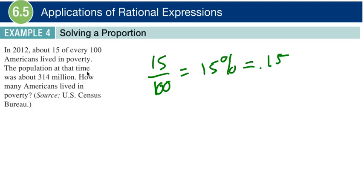The question now is, if the total population was 314 million, about how many people actually lived in poverty? So basically, what is 15% of 314? The way you do this is multiply. You take your 15% and multiply that by 314 million.